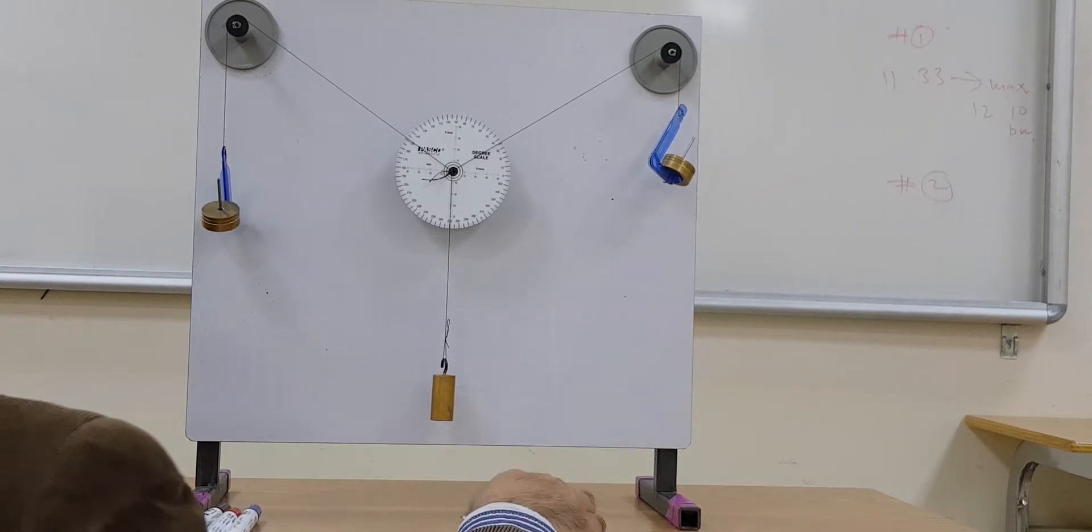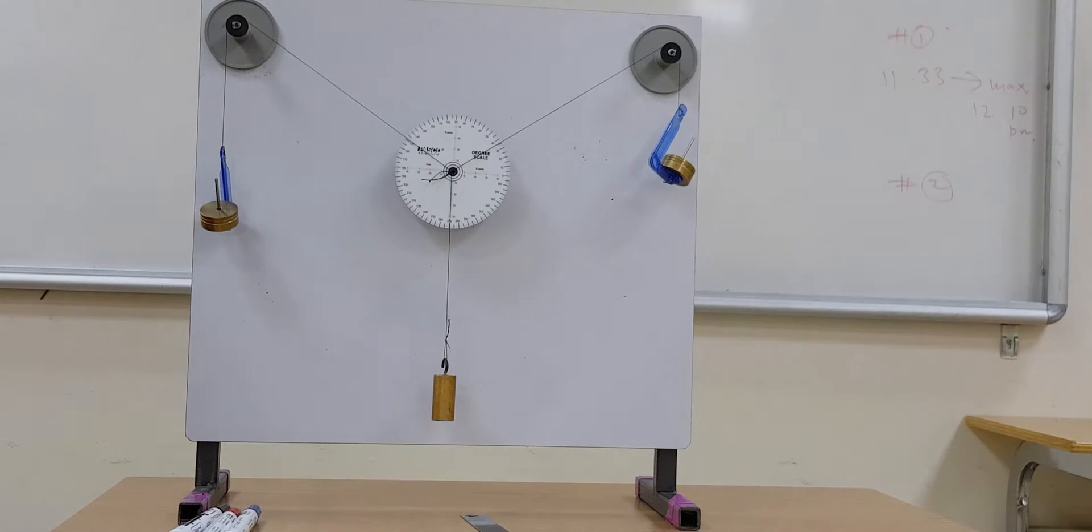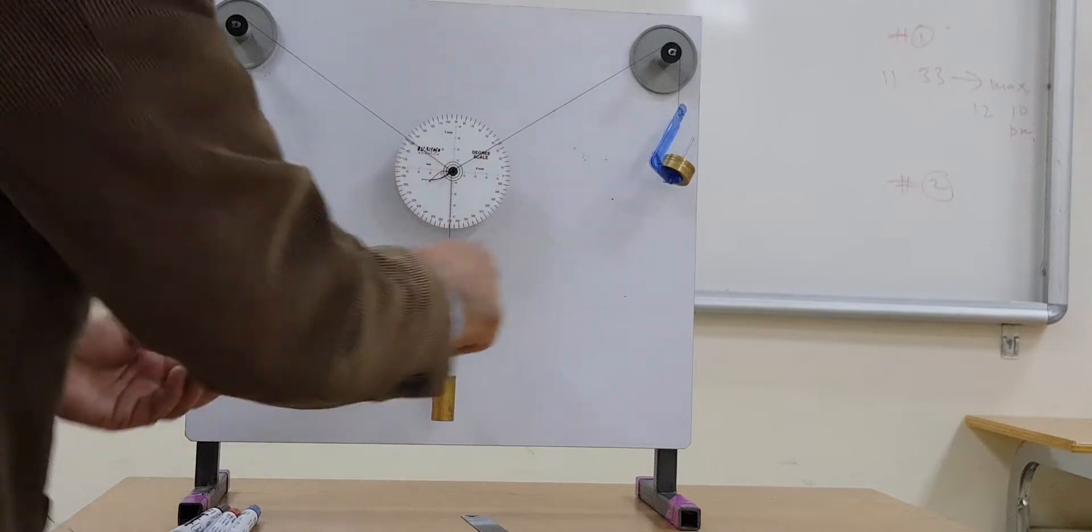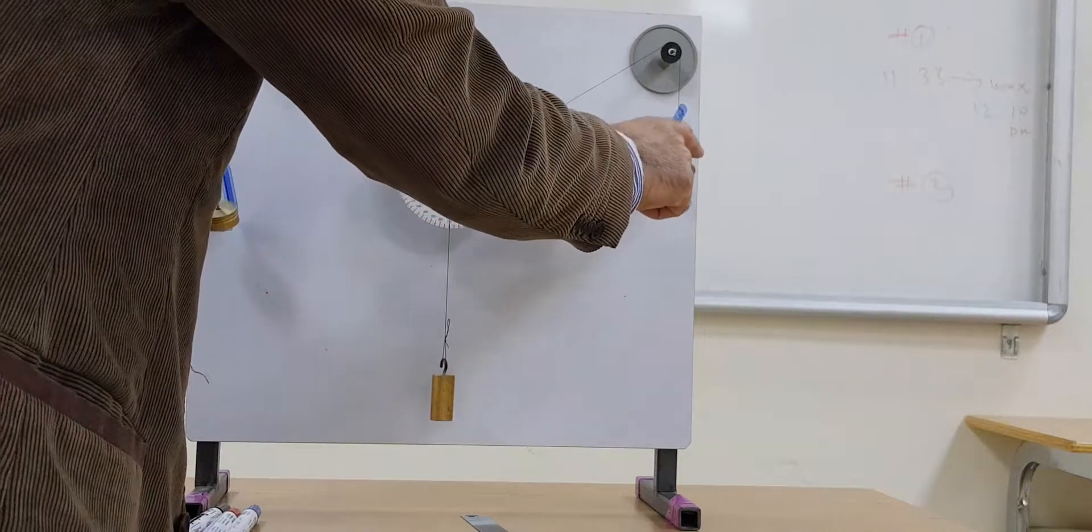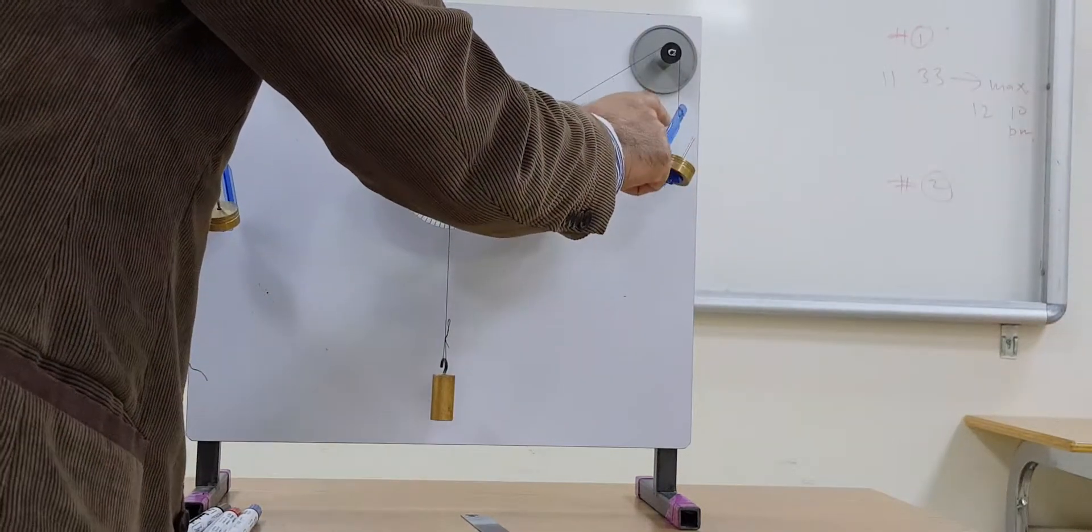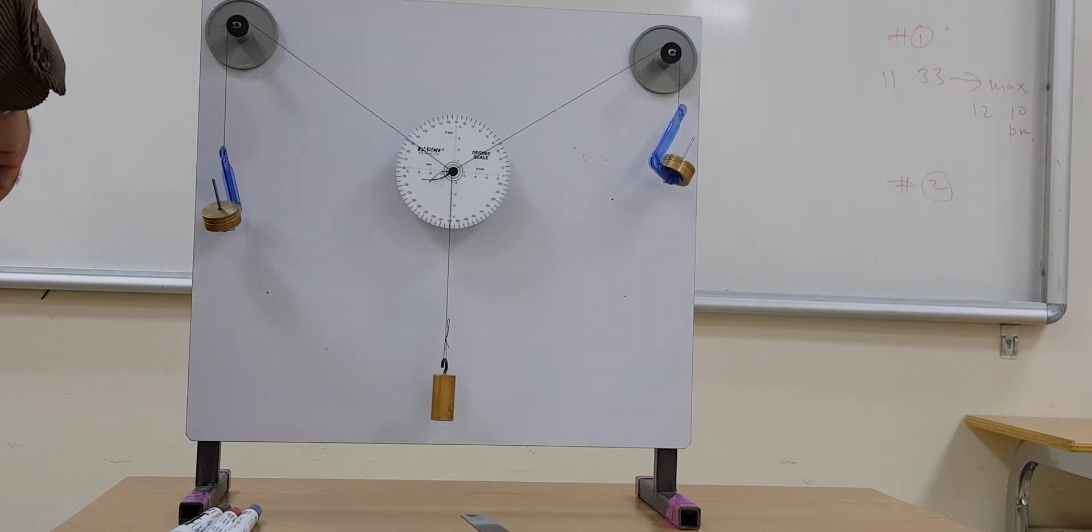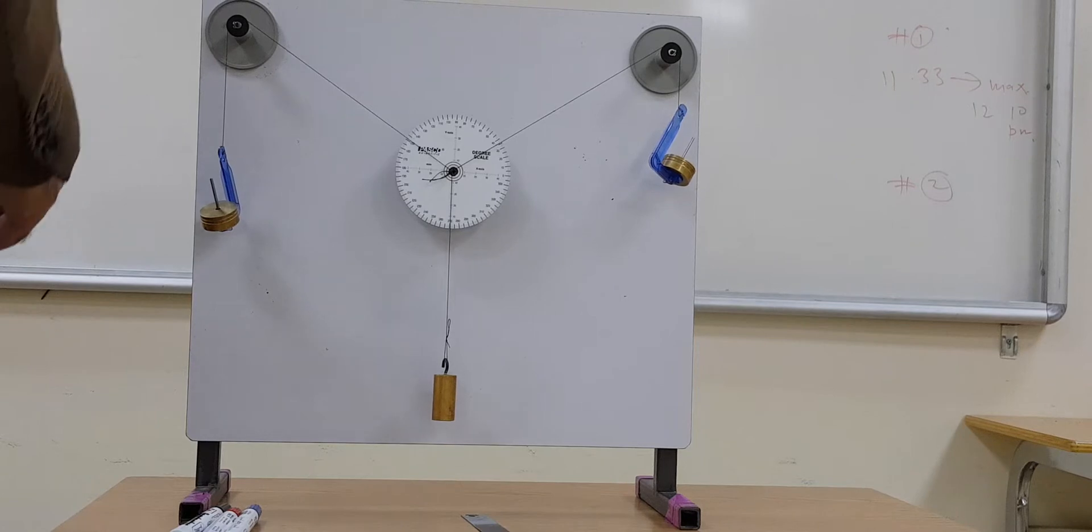It's written here: 10 grams, 50 grams, 20 grams, and 90 plus 5 equals 95 grams. What I'll be writing on my data sheet is 95 grams.